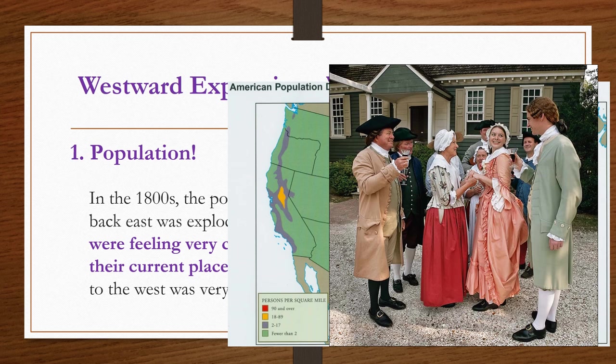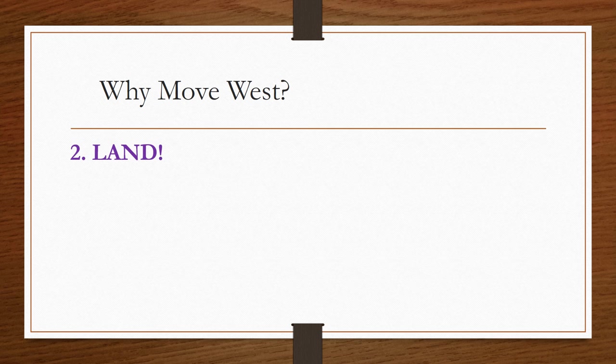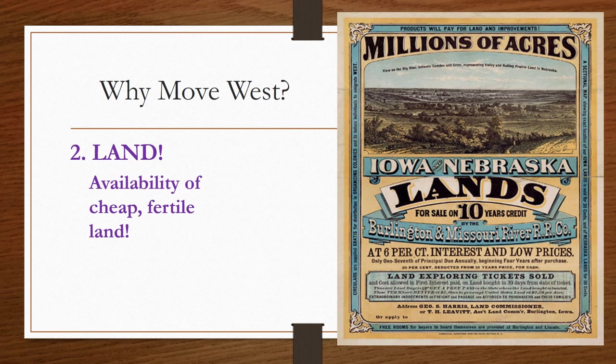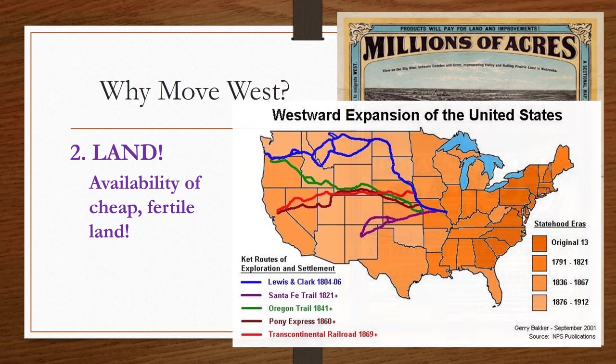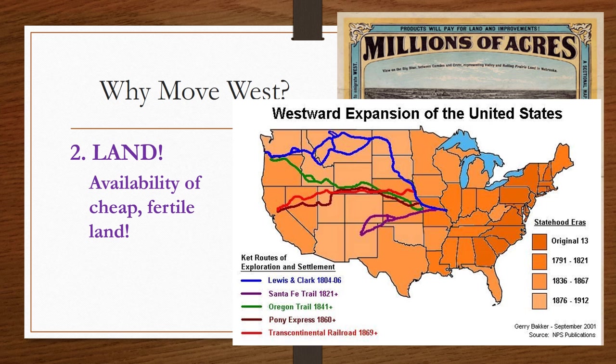Why move west? Land! The availability of cheap, fertile land was a huge motivating factor for Americans to move west. You can see this primary source — a poster advertising millions of acres in Iowa and Nebraska — and check out how low the prices are. No wonder people were loading up their Conestoga wagons and going west. Cheap land was for sale, and they could make a lot of money by planting crops, harvesting them, and selling them.